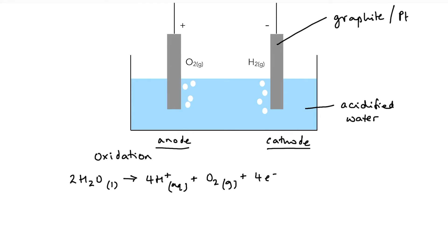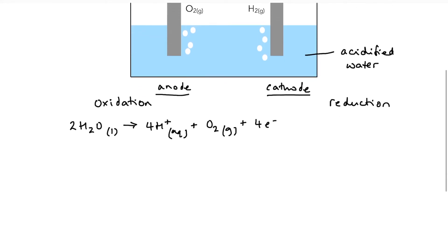At the cathode, I have a reduction reaction happening. So water is being reduced. So it's gaining electrons. 2H2O plus 2e- going to form H2 and two hydroxide ions, which are going to remain in solution.